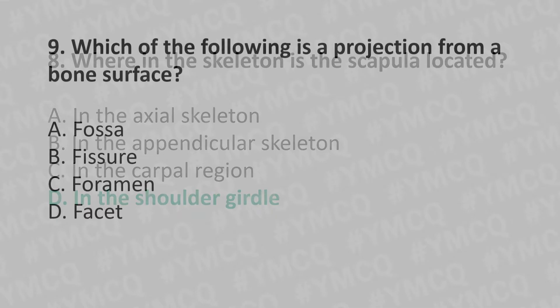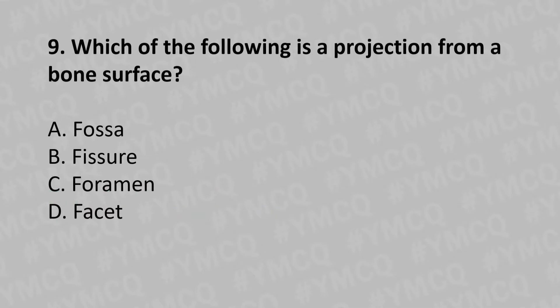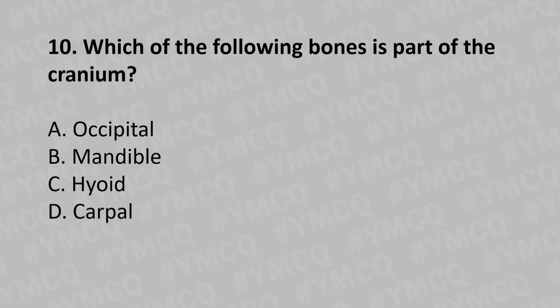Moving to our ninth question: Which of the following is a projection from a bone surface? Option A: fossa, Option B: fissure, Option C: foramen, Option D: facets. The answer is Option D: facets.